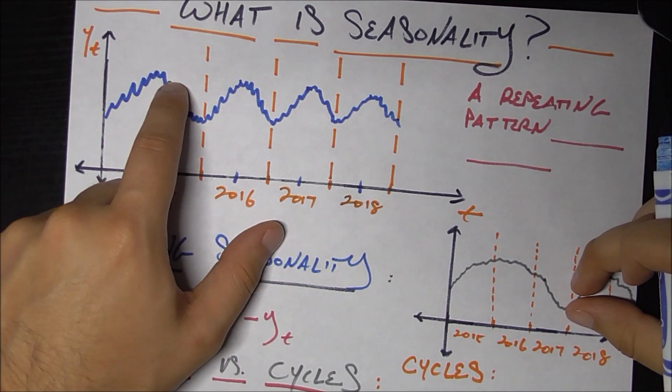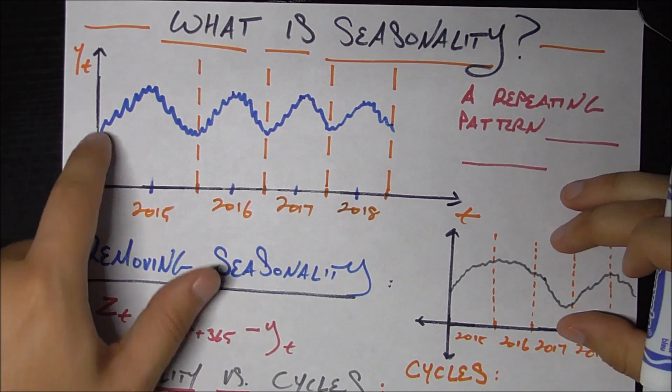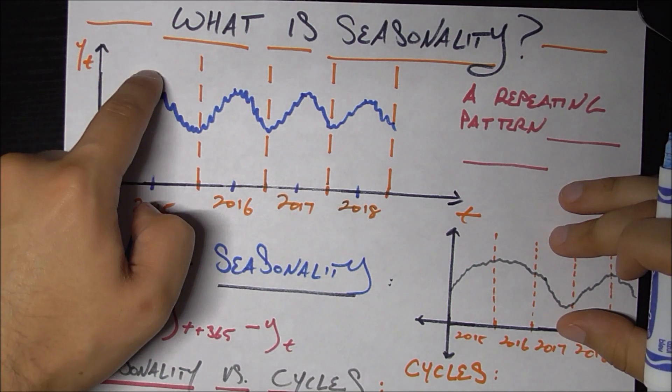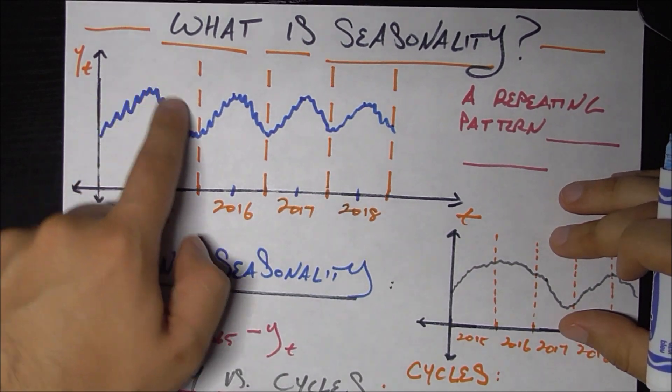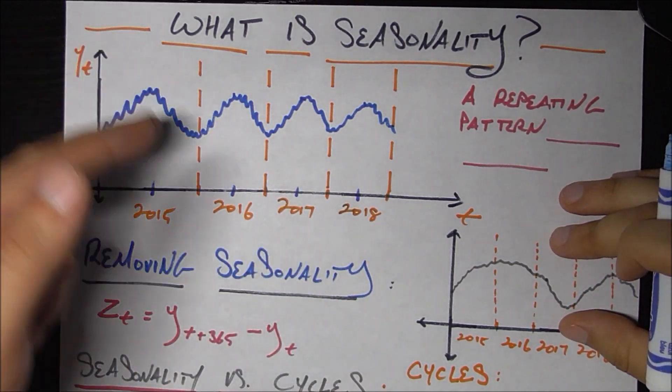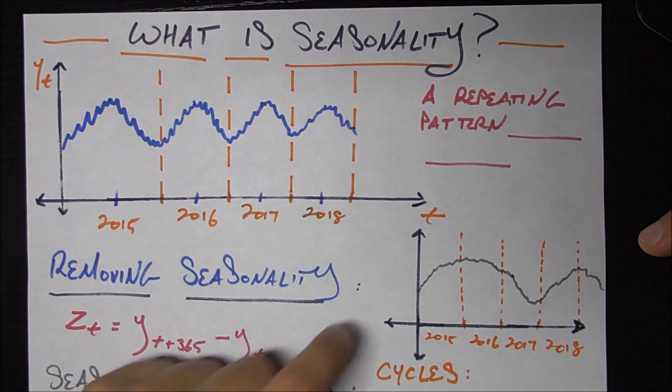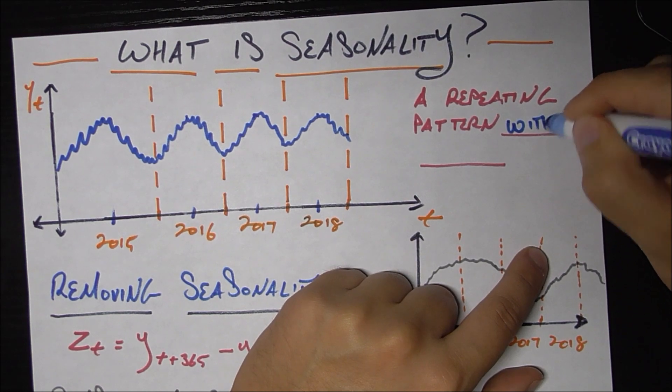And then when it gets to winter, of course, your ice cream sales drop because people don't want it as much. So we see that this has a very clear seasonal component. We see these highs in the summer, the lows in the winter, and this happens pretty much every year. Of course, every year is not exactly the same, but there's that general trend. And that's what seasonality means in time series.